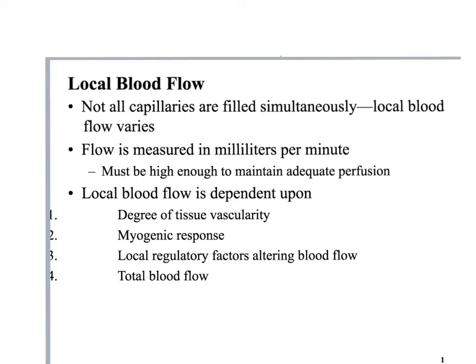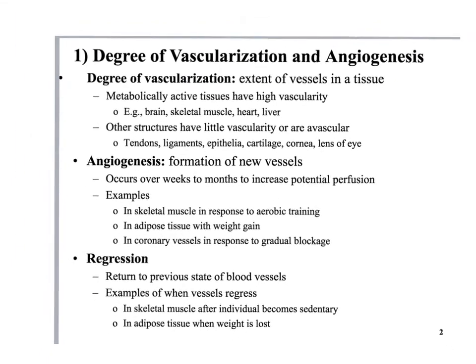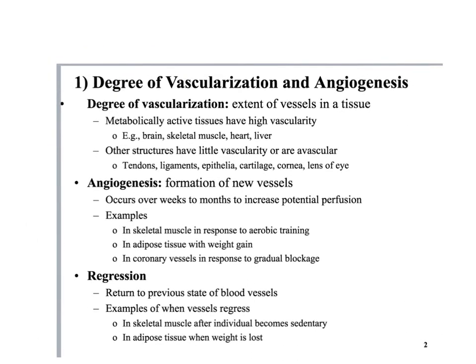What do you know about the healing process of skeletal muscle versus cartilage or a ligament? Ligament and cartilage heal much slower. The degree of vascularity — the extent of vessels in the tissue — matters. Other things that are metabolically active, such as the brain, skeletal muscle, heart, liver, and the spleen, have high vascularity.